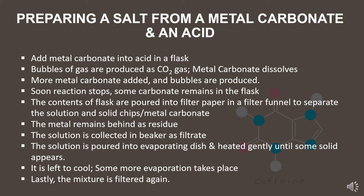Here are the steps of preparing a salt from a metal carbonate and an acid. Step 1: Add metal carbonate into acid in a flask. Step 2: Bubbles of gas are produced as carbon dioxide gas, and the metal carbonate dissolves. Step 3: More metal carbonate is added and bubbles are produced. Step 4: Soon the reaction stops and excess metal carbonate remains in the flask.